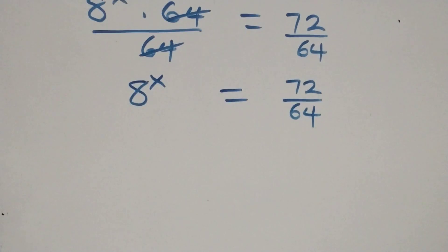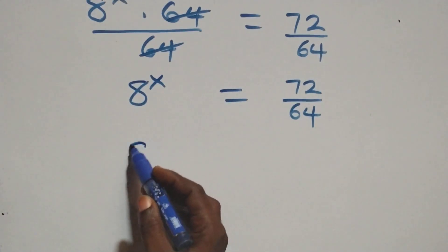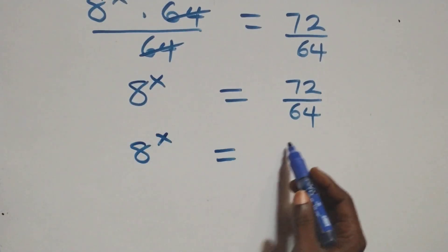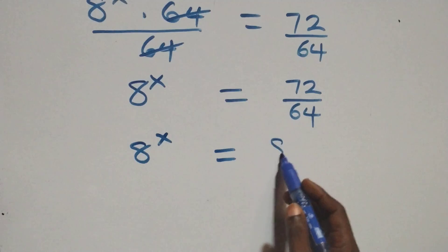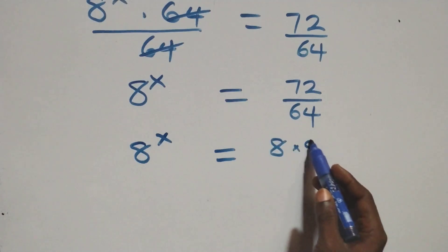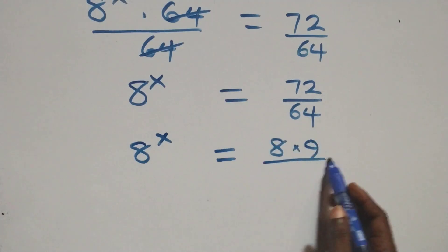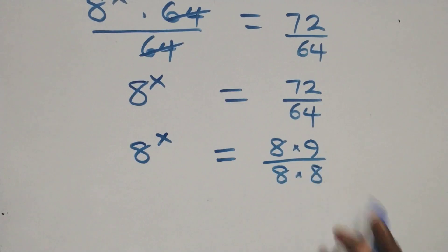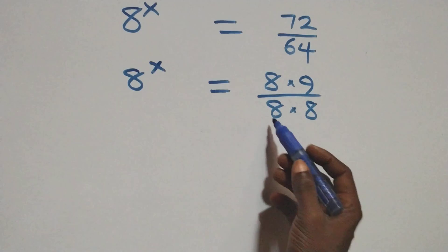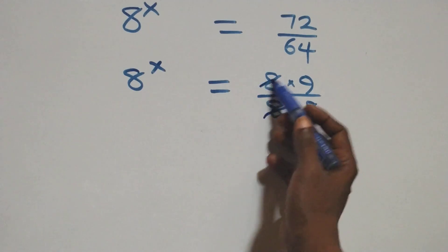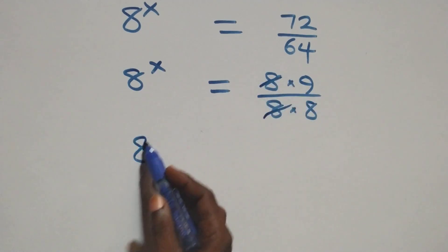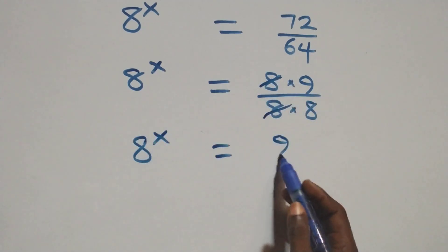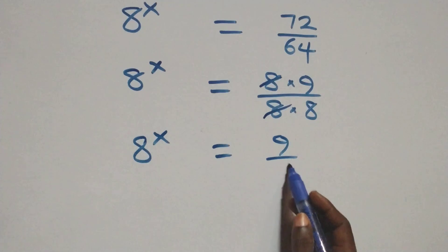Next, this is the same thing as 8 raised to power x equals 72 over 64. We can write 72 as 8 times 9 and 64 as 8 times 8. The 8s cancel each other, and we have 8 raised to power x equals 9 over 8.